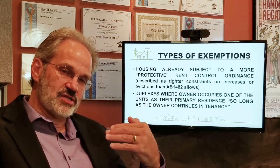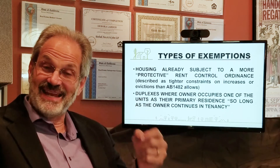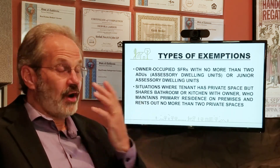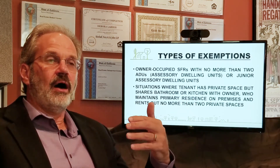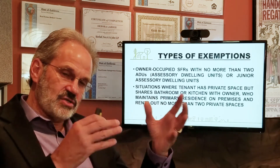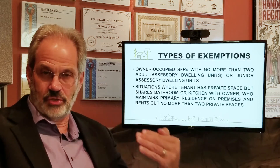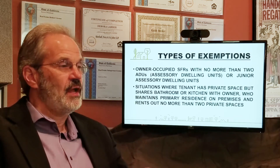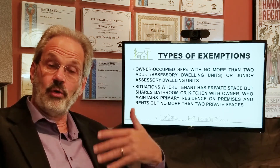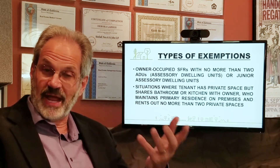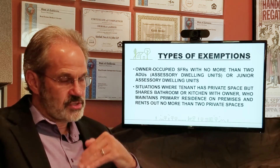Duplexes may be exempt, but only in instances when the owner resides in one of the two residences and maintains it as their primary residence. Owner-occupied single-family residences with no more than two ADUs are also exempt. Coming into 2020, building tiny homes in your backyard is becoming more prevalent — if you have one or two, this would not apply; if you have three, it would. Similarly, if you are in a shared rental situation, you are the owner, you live on the premises, and you rent out one or two private spaces with shared kitchen and living facilities, this would not apply. More than two and just cause would apply.